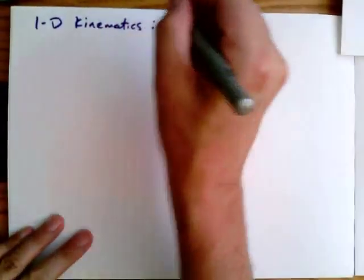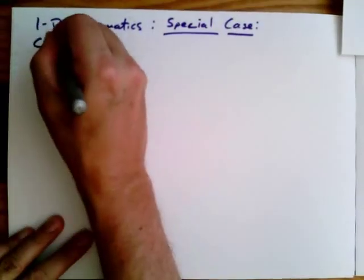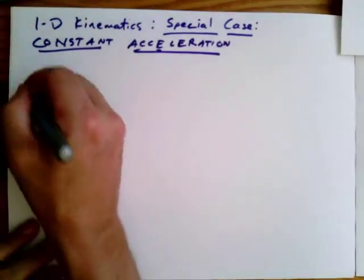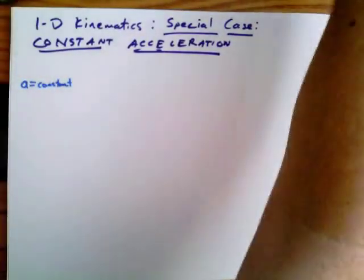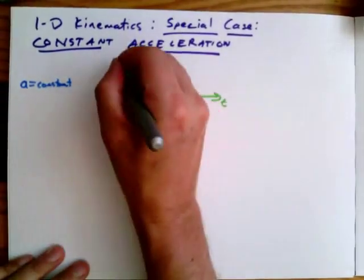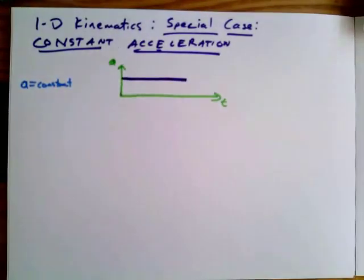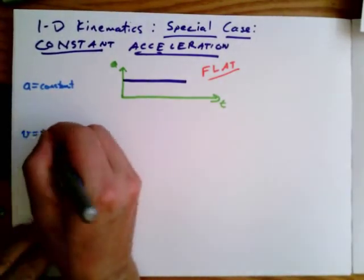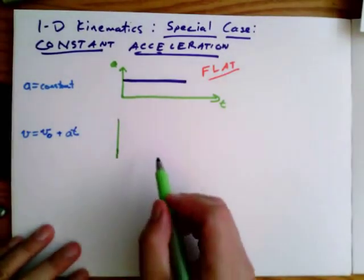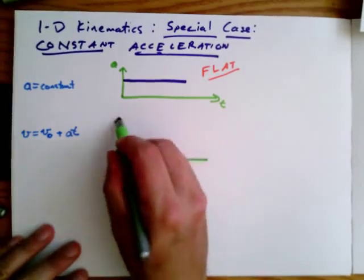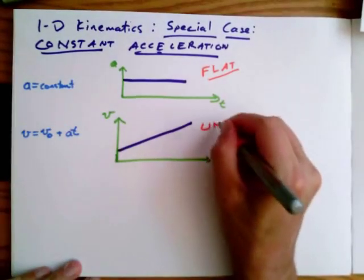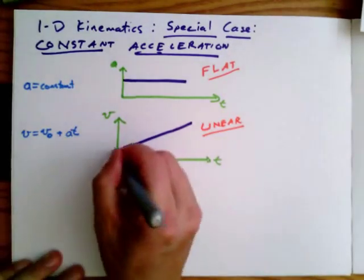So let's look at the kinematics of constant acceleration in terms of the time variability of the various properties. We'll start with the acceleration, which we know is constant. If I make a plot of acceleration as a function of time — a versus t — since it's constant it's just a flat line with zero slope. Likewise, for a plot of velocity, we have the expression v naught plus at, which is linear in time. So the velocity as a function of time is a straight line with a constant slope — that's the indication of constant acceleration. The slope tells you the acceleration and the intercept tells you v naught.